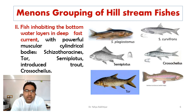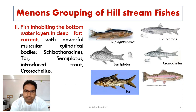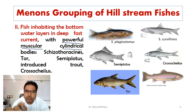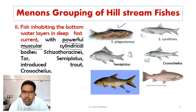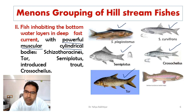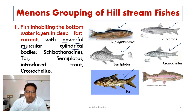Group 2 comprises fish inhabiting the bottom water layers in deep fast current. According to Menon, these fishes have powerful musculature and cylindrical bodies to cope with the fast-flowing current. Examples include Schizothorax, Schizothorax curvifrons, Semiplotus, Crossocheilus, Tor, and exotic trouts. These group 2 fishes have powerful muscular cylindrical bodies suited to deep fast currents.